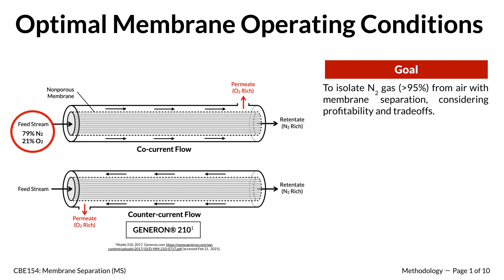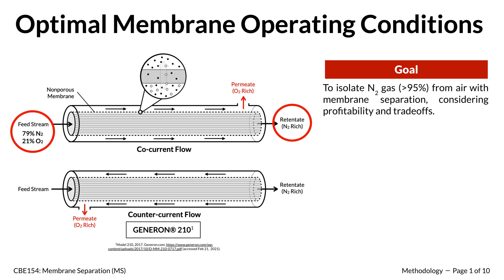A feed airstream, assumed to be binary, enters and flows through the membrane cartridge, ultimately leaving as a retentate stream. A portion of the feed gas diffuses through the non-porous membrane, in which oxygen gas diffuses much faster than nitrogen, causing the permeate stream to be oxygen-rich. This permeate stream exits the cartridge on either end, depending on the membrane configuration.